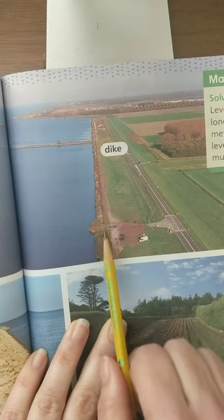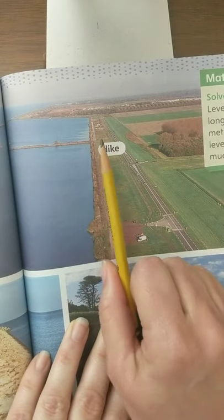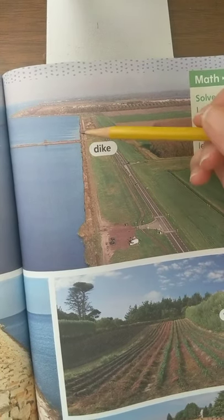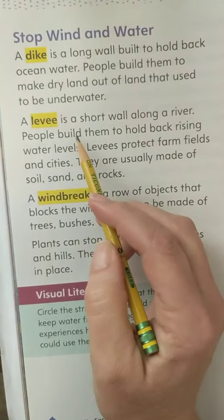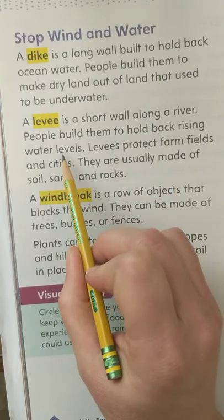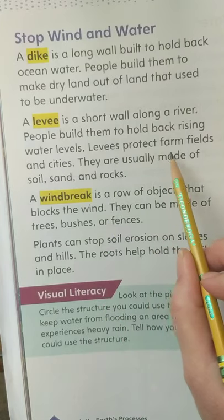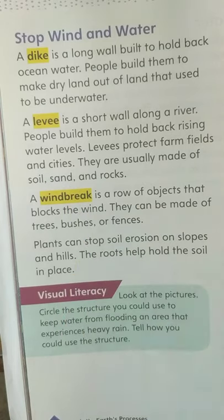They built this dike — this big long wall — to keep the ocean water from eroding further and further out, and created land that we can use by building that wall. A dike is the name of the wall for the ocean. There's a different name for rivers: a levee is a short wall along a river. People build levees to hold back rising water levels.